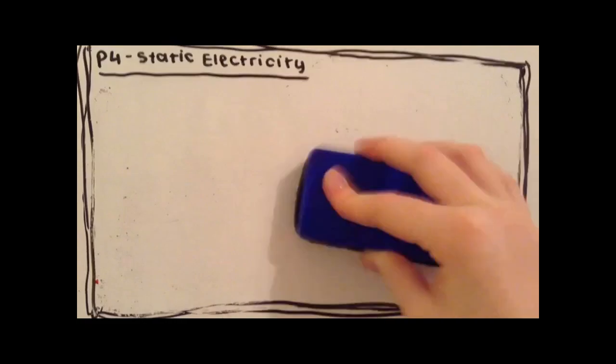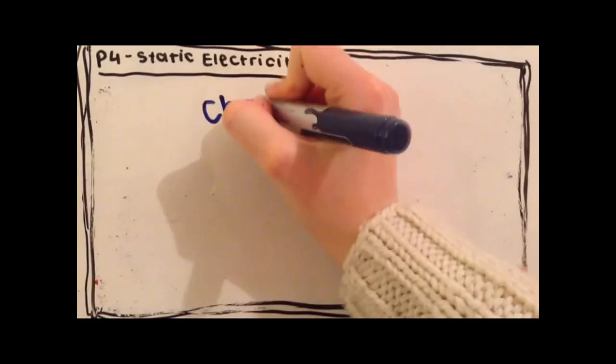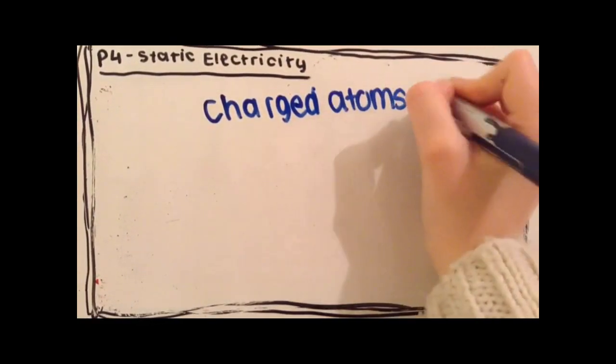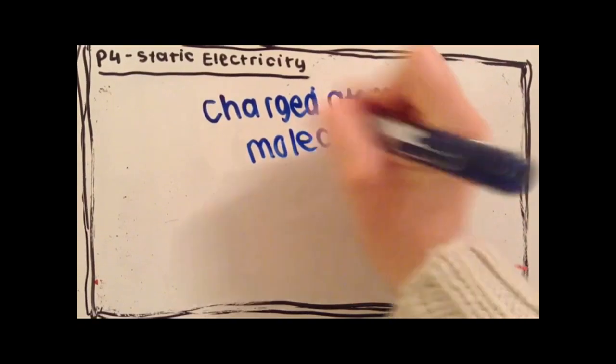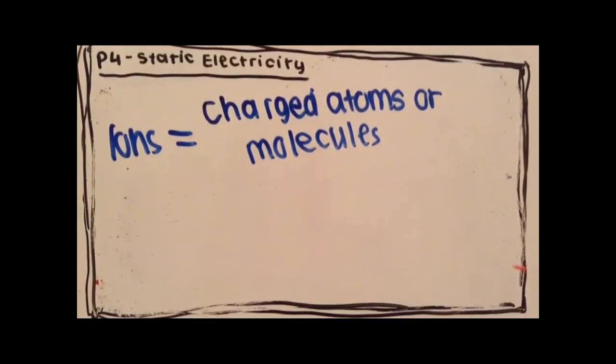Atoms or molecules that become charged are known as ions. So charged atoms and molecules are known as ions.